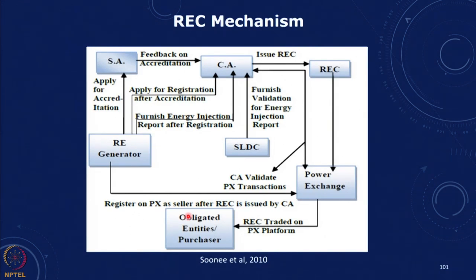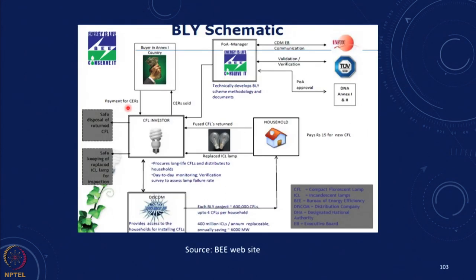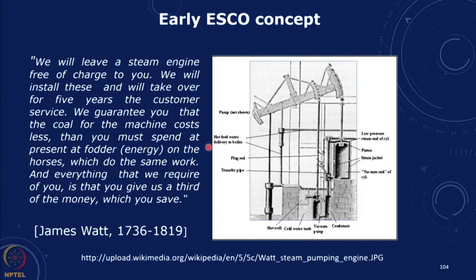When we discussed financing we looked at the mechanism of leasing — the example of the electricity company where the manufacturer actually leased the capacitors and got paid from the electricity bill. A similar concept was adopted in the scheme for the compact fluorescent lamp, Bachat Lamp Yojana, where the prices of lamps would be brought down based on the fact that CERs would be sold at a price.